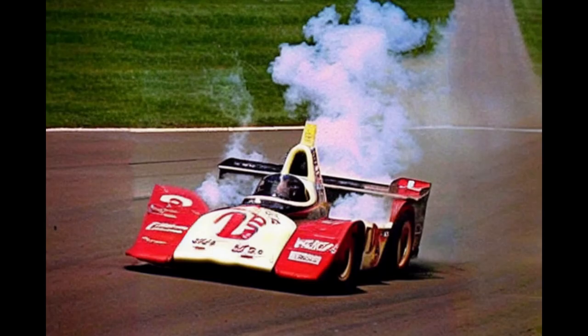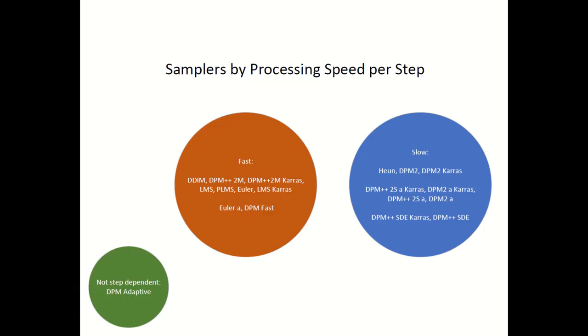Next up is processing speed. This is not how many steps it takes to reach an image, but instead a measure of how much computing power each step takes. Credit to Snare Emu on Reddit for doing this first — all I did was verify the results by testing some of the samplers. All of the samplers except one are in two buckets: fast or slow. Slow samplers take twice as long per step as fast samplers. The oddball, DPM Adaptive, removes steps as a variable and instead uses CFG.